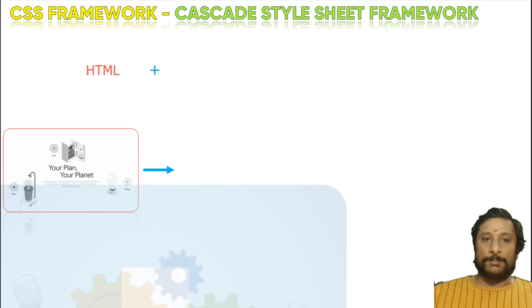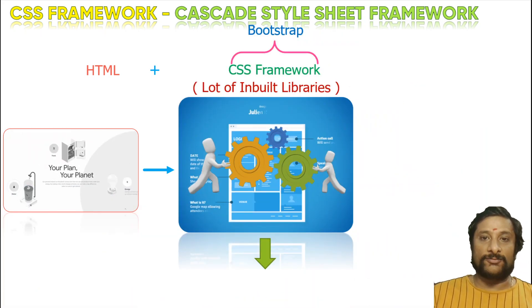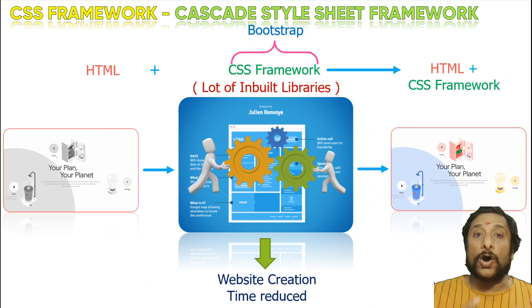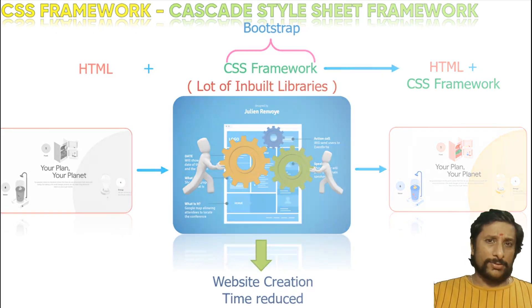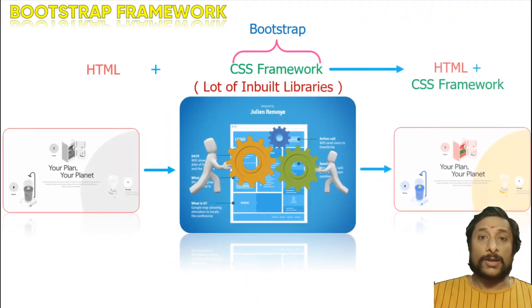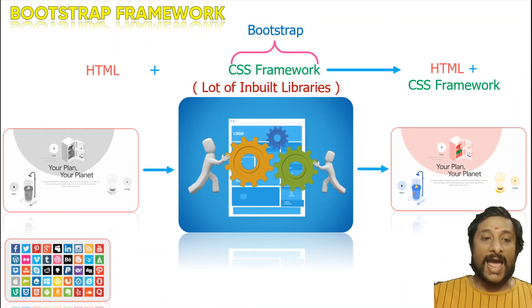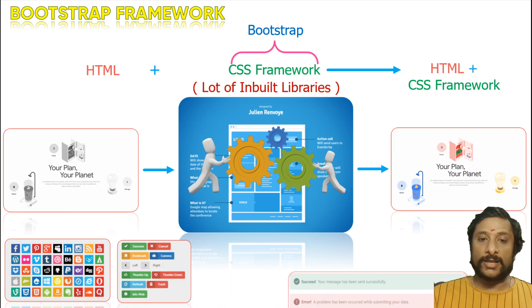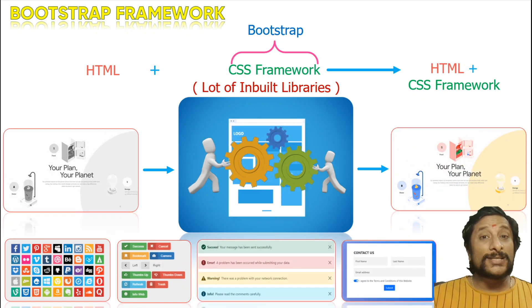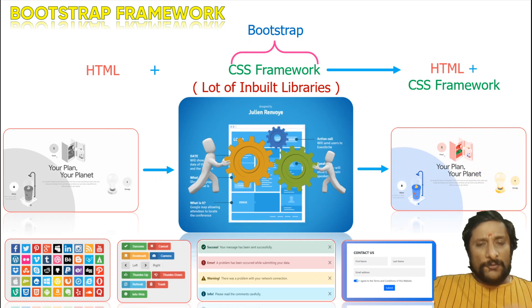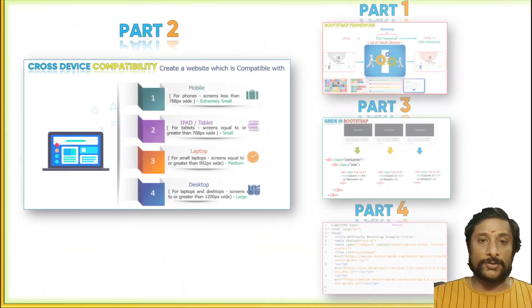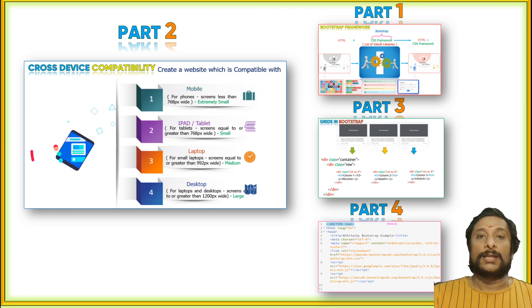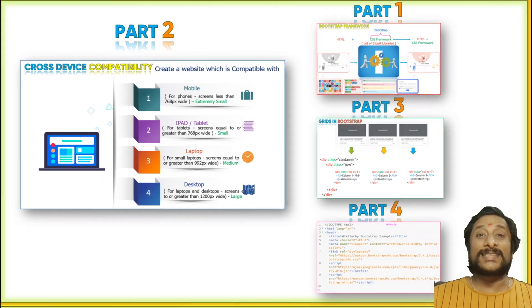Bootstrap is a very famous example of a CSS framework. Bootstrap kind of frameworks will have lots and lots of libraries. They will reduce your time. What kind of libraries? The CSS framework has iconic formats, inbuilt buttons, alert boxes, and you are able to design forms — everything is inbuilt. Just call it and you will get the result. So, website creation time will be much more reduced. That's why people are looking for Bootstrap kind of CSS frameworks.